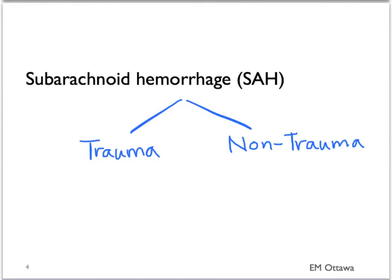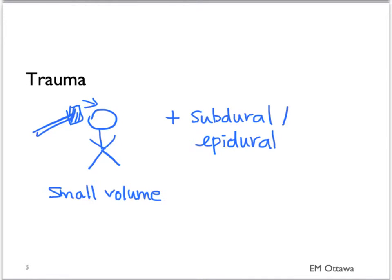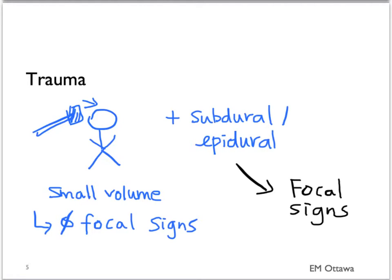Subarachnoid hemorrhage can be separated into traumatic and non-traumatic causes. Traumatic subarachnoid hemorrhage tends to occur with trauma and in combination with other traumatic bleeds. Traumatic subarachnoid bleed by itself tends to be of small volume, so the patient usually presents with headache and maybe nausea and vomiting, but no focal neurological signs. However, since it usually occurs with other bleeds, those bleeds cause neurological signs and decreased level of consciousness and GCS. The risk of this bleed is increased by the use of anticoagulants.